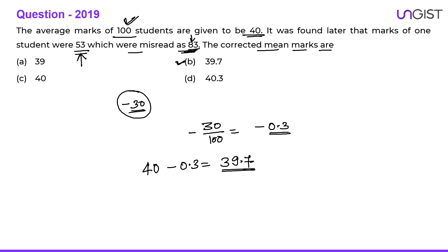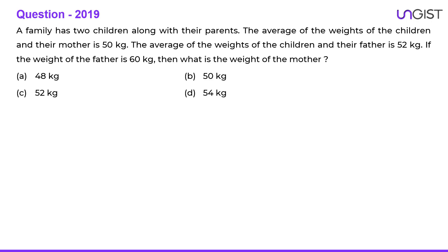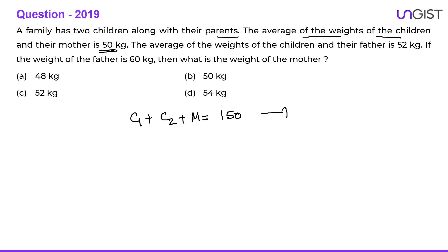Now let us move to the next question. A family has two children along with their parents. The average of the weights of the two children and their mother is 50 kg. So their sum will be 50 into 3, that is 150 kg. So the sum of the weights of both children and mother is 150 kg. Let us call this equation number one.